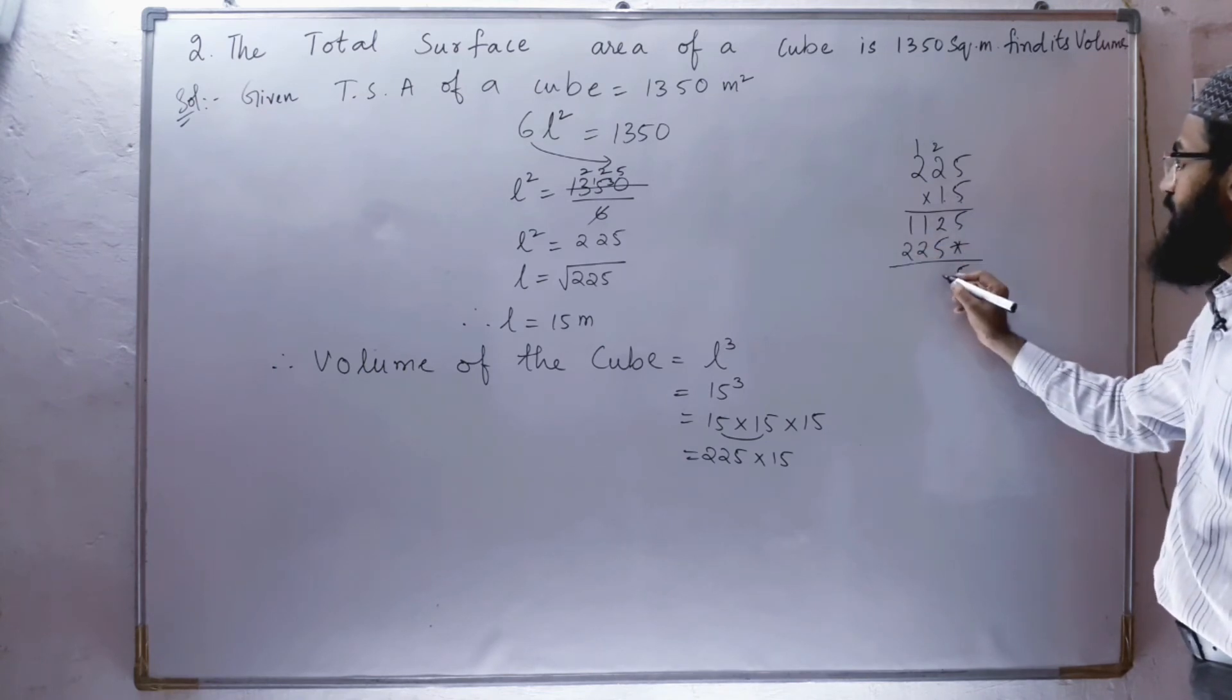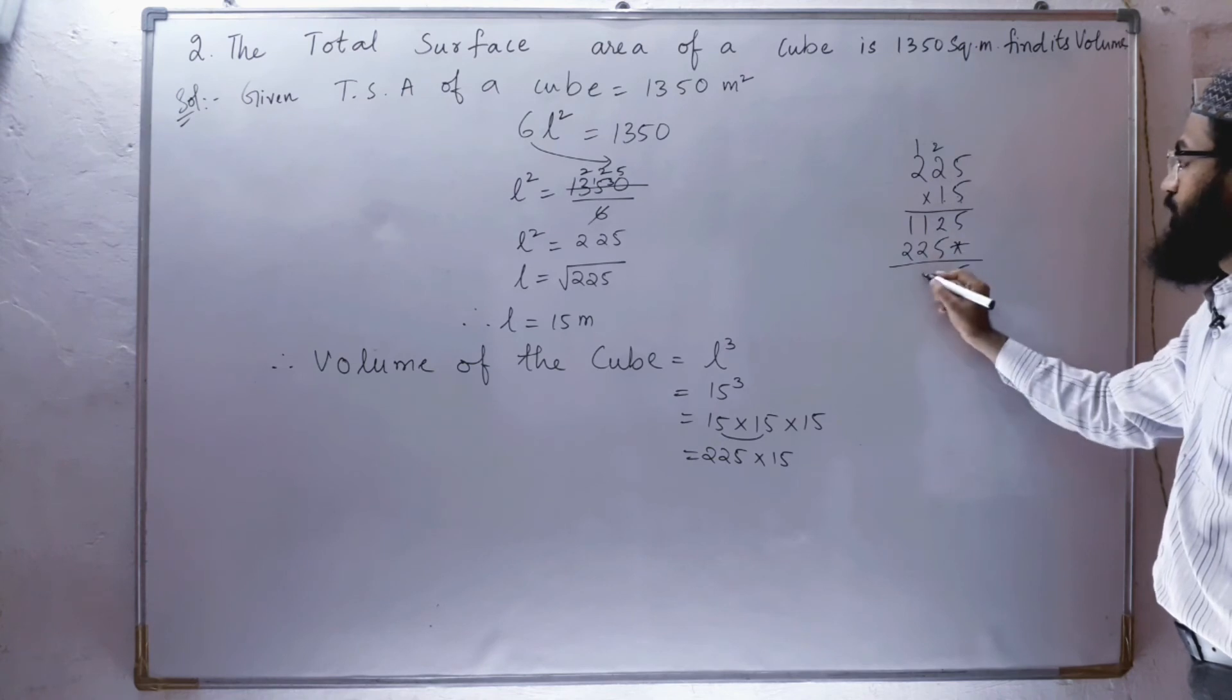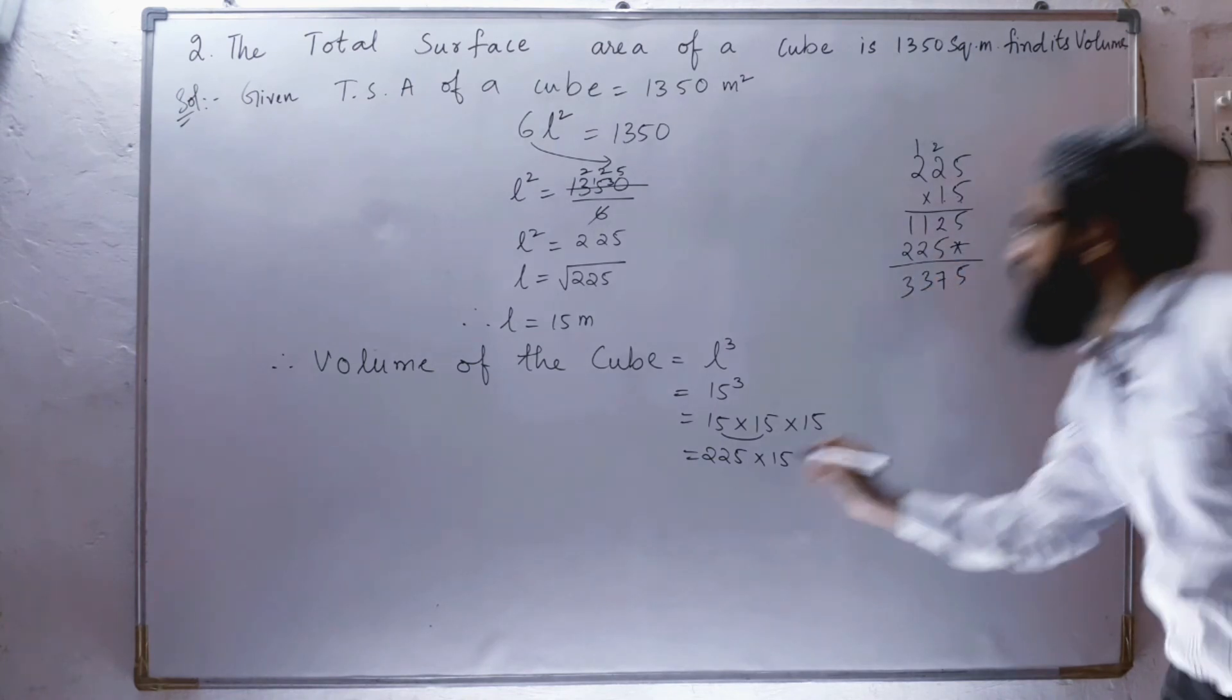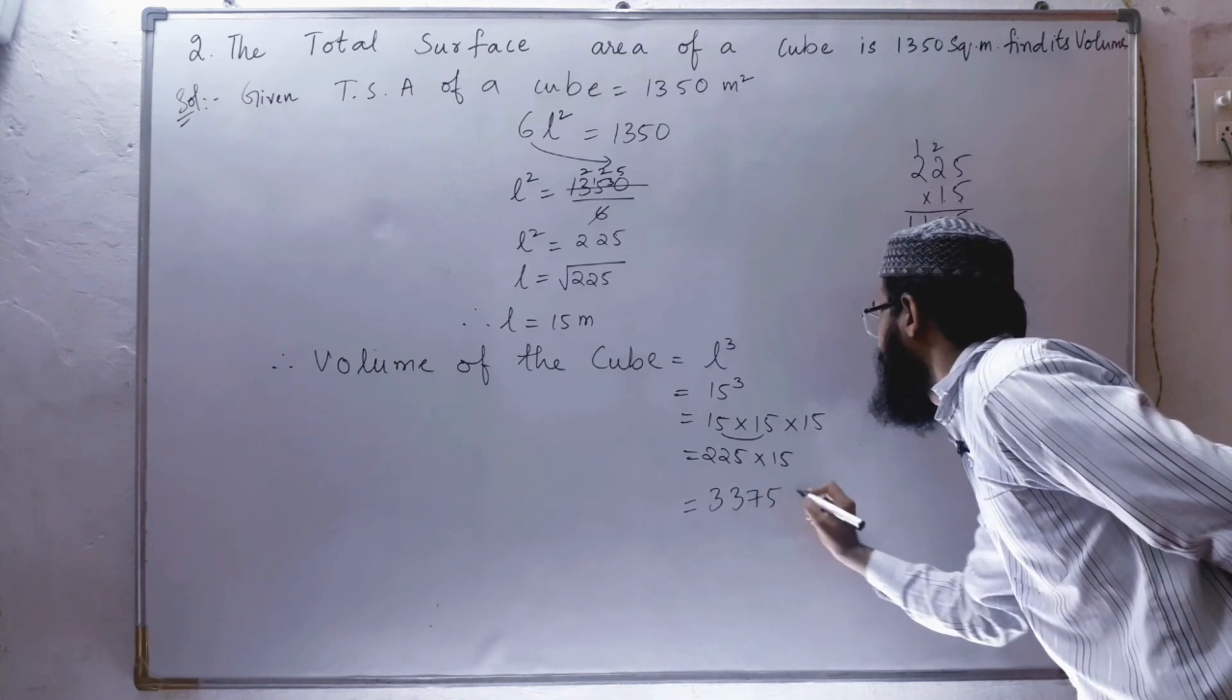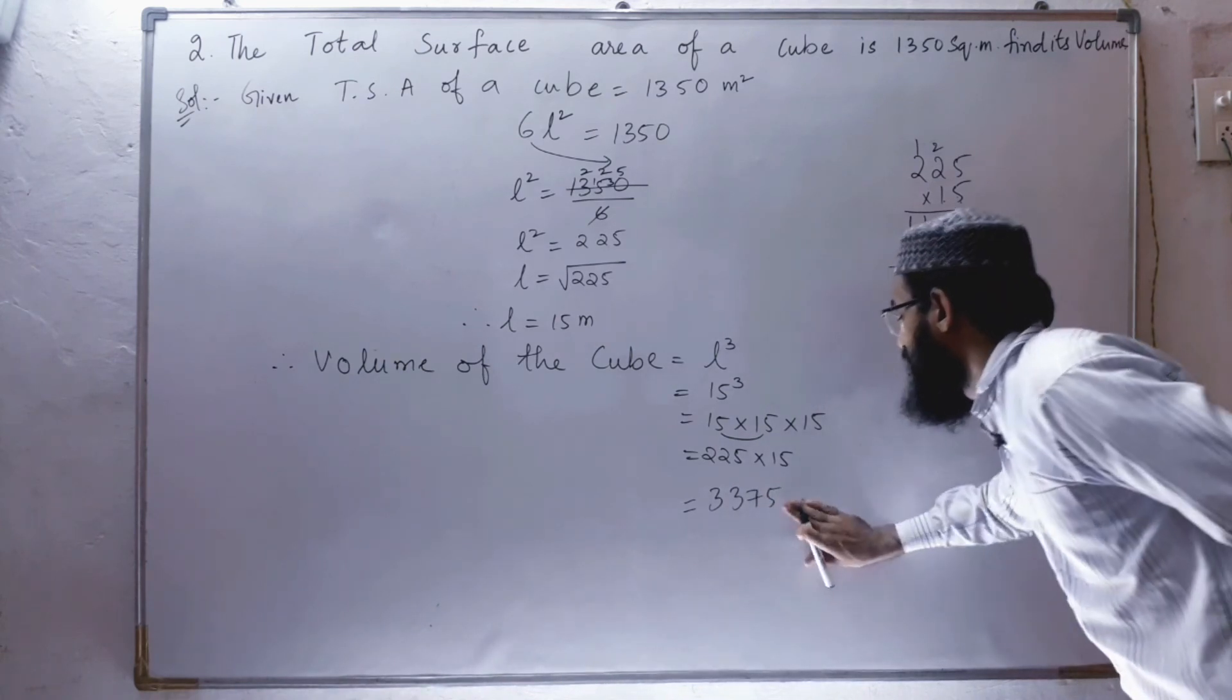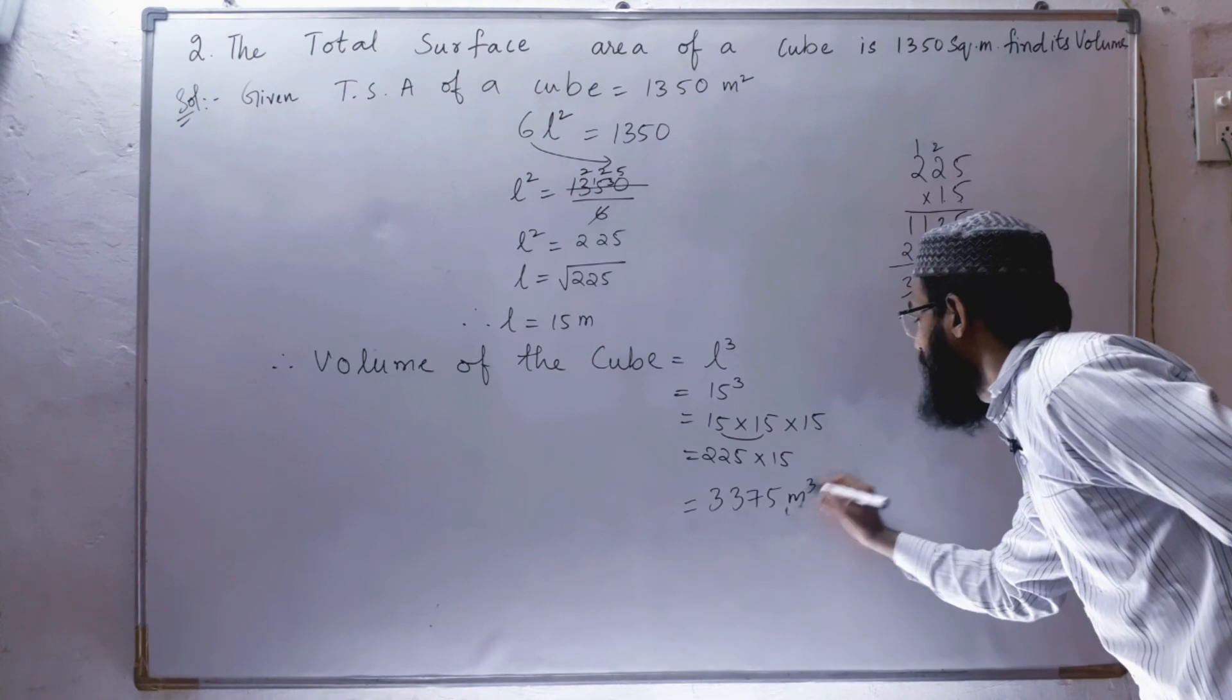So 5, 2 plus 5 is 7, 2 plus 1 is 3, 3. So the volume is 3375 cubic meters.